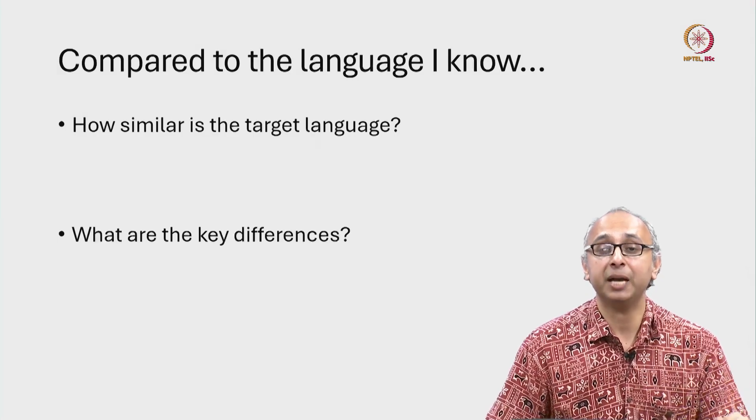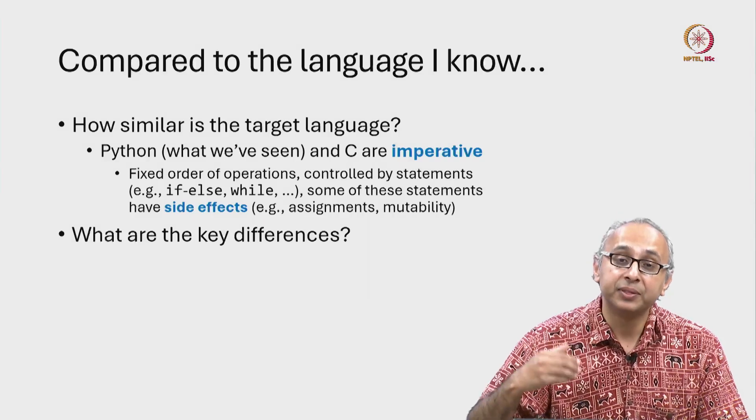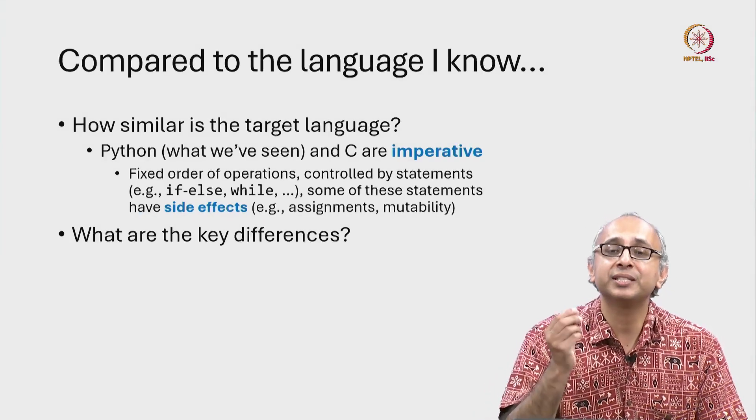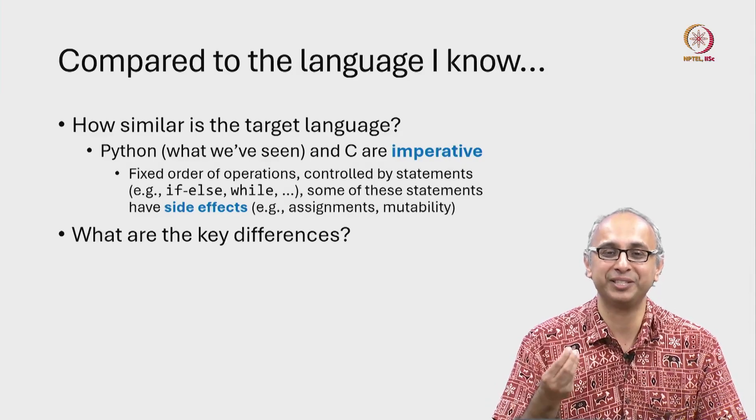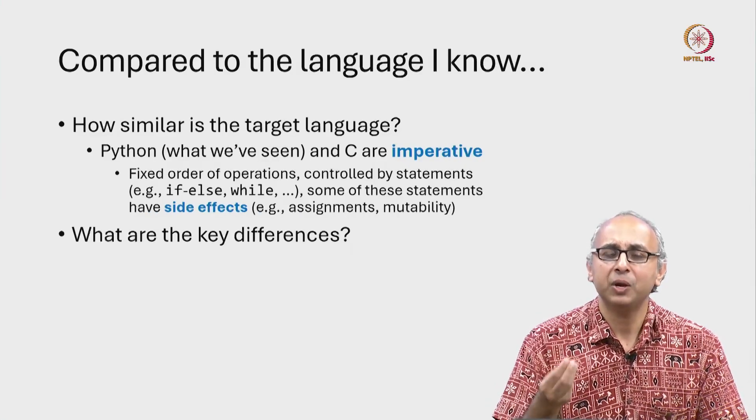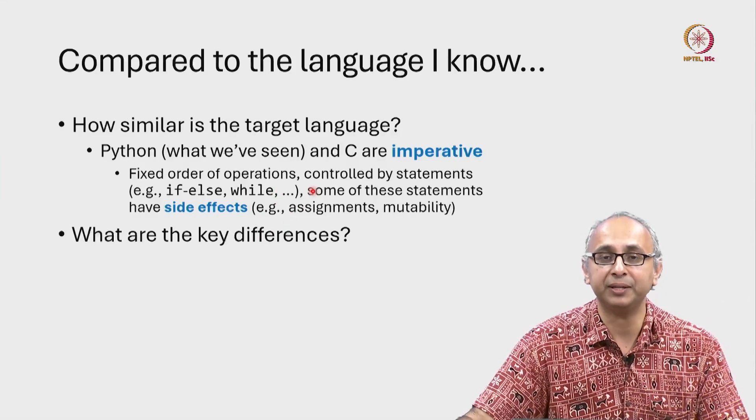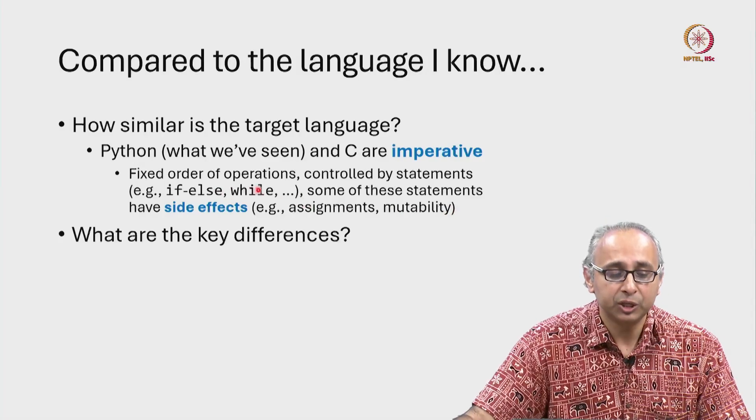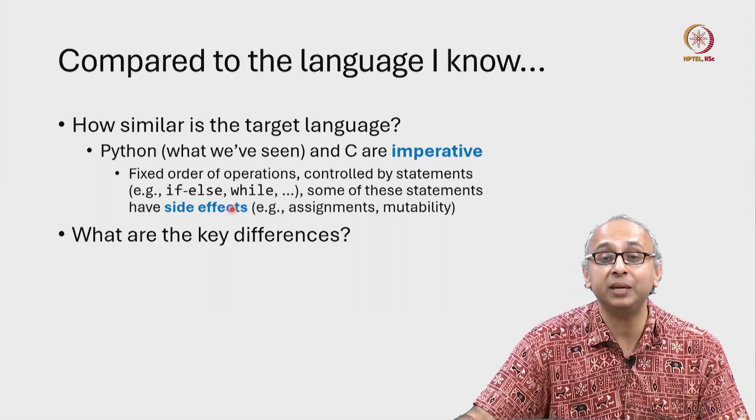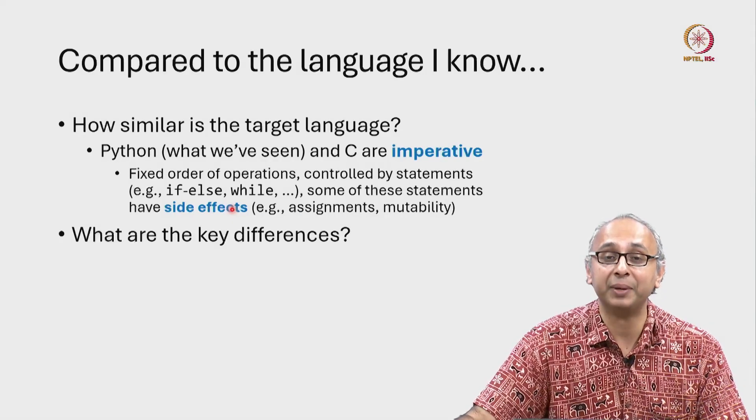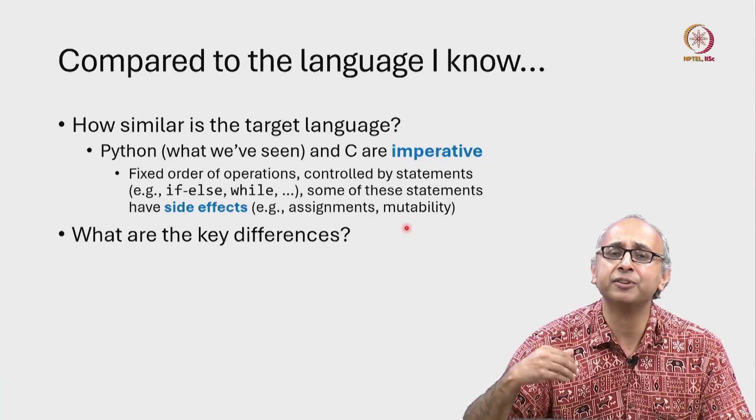Now I'm going to give you my perspective on this. The portion of Python that we have seen and the C programming language are both similar in the following sense. They are both what we call imperative in style. It means that we have a fixed order in which statements operate and we can control that order as programmers using control structures like if, else, and while, and you will see these keywords in the C programming language as well. And then we have seen statements like assignment statements that have side effects.